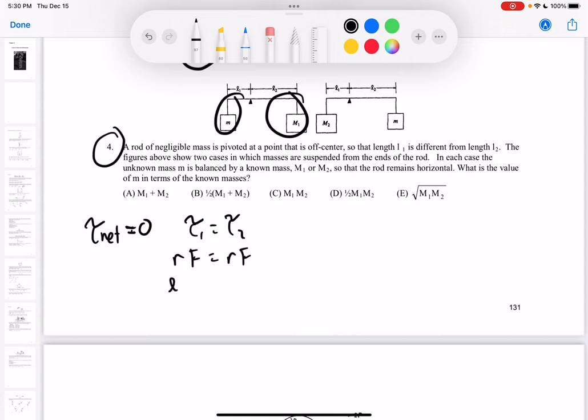So this first r is L1, and then we have mg. Sorry, L1, and then this would be L2, m1, g. And the g's just cancel out.